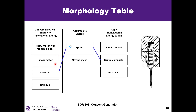We use this table and select one methodology from each column. For example, we take a solenoid, a spring, and multiple impacts. As the solenoid is energized, the mass is brought back up into the spring, accumulating energy. When the solenoid current is released, the mass is thrown forward by the spring energy and impacts the nail. This can be turned on and off multiple times very quickly, giving a hammering impact on the nail.